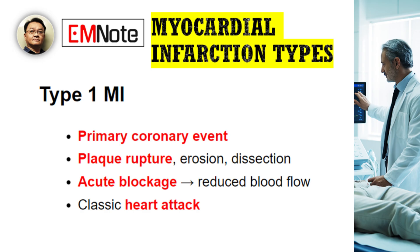First up, we have type 1 MI. This is what most people think of as a classic heart attack. It's caused by a primary coronary event, typically a plaque rupture, erosion, or dissection in a coronary artery. This event leads to a complete or partial blockage, causing a significant reduction in blood flow. Think of it as an acute, sudden event originating from the coronary artery itself.